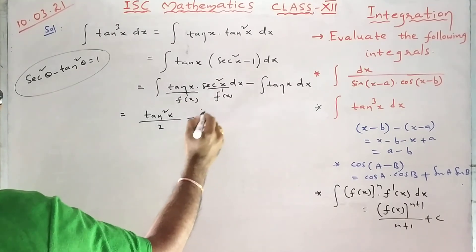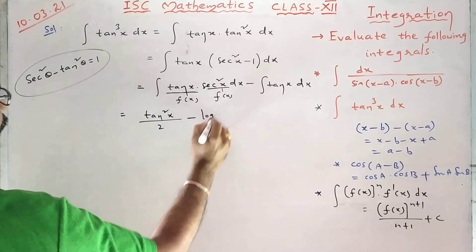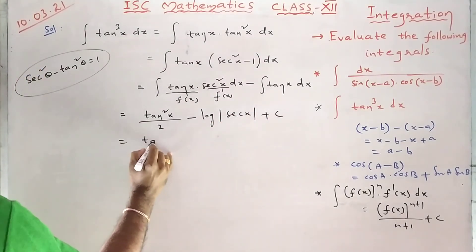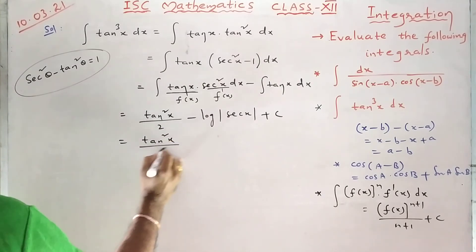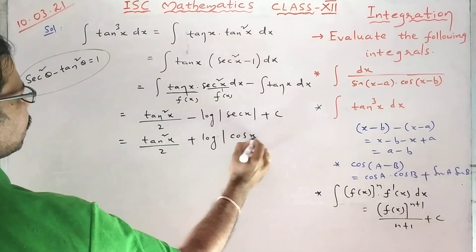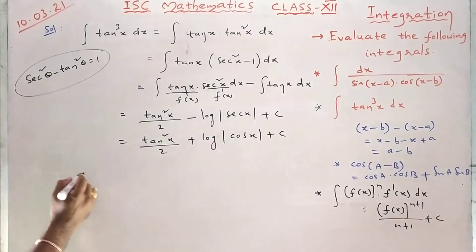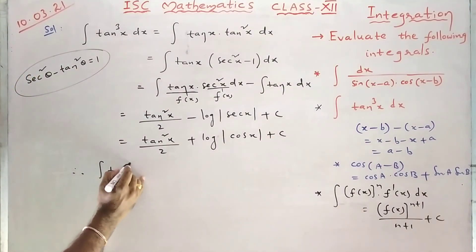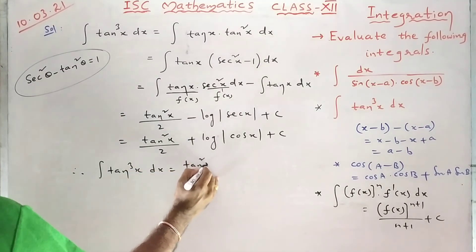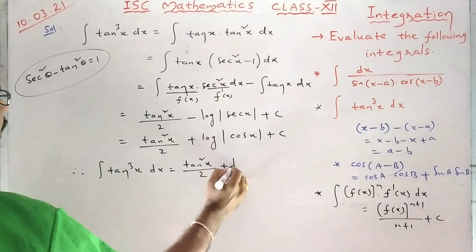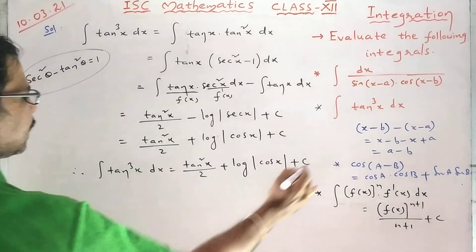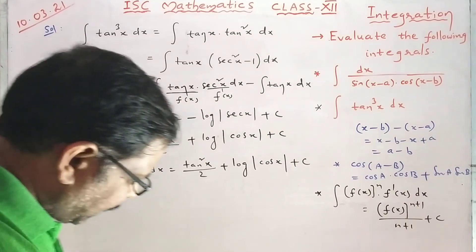Minus: the integration of tan x is log mod secant x. Or we can also write tan square x upon 2 plus log mod cos x. Therefore, integral of tan cube x dx equals tan square x upon 2 plus log mod cos x plus C. That is the end of the solution.